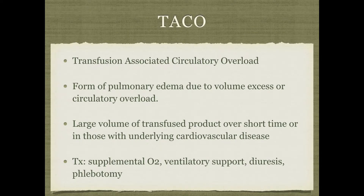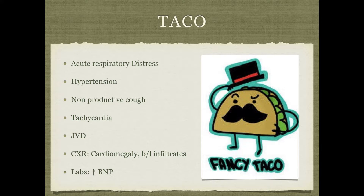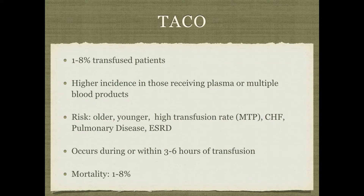Now TACO — transfusion-associated circulatory overload. This is pulmonary edema due to excess volume from transfusion. It happens when you give a large amount of blood in a short time, or in patients with cardiovascular or renal disease. Treatment: give oxygen, often start BiPAP or intubate, and diurese them. Symptoms include acute respiratory distress, hypertension, cough, tachycardia, and JVD — basically the same symptoms as fluid overload. Patients at risk include the very young, the elderly, those with CHF, and end-stage renal disease. Mortality is 1 to 8%.